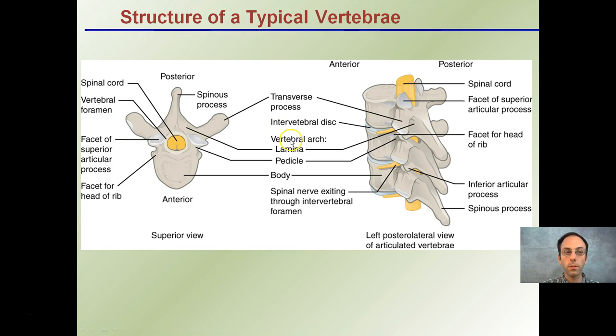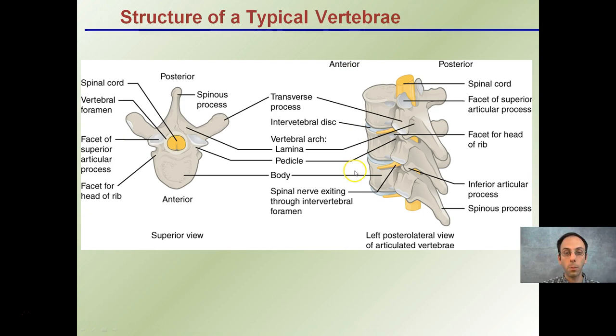The typical structure of a vertebra is shown here. I want to draw your attention to some important terms: posterior and anterior. This allows you to orient yourself to where structures are located. Posterior is totally on the back, while anterior points more toward the center portion of the body. The superior view is looking straight down, and again we see our posterior and anterior portions. Be familiar with these terms to orient yourself with different bone structures and during dissections.